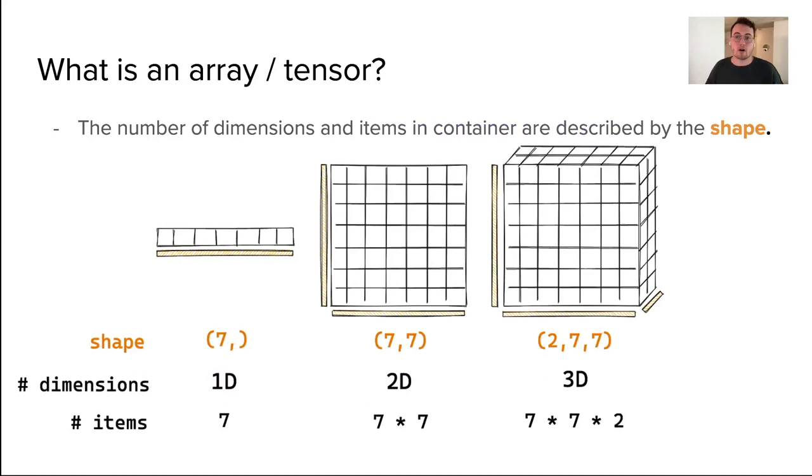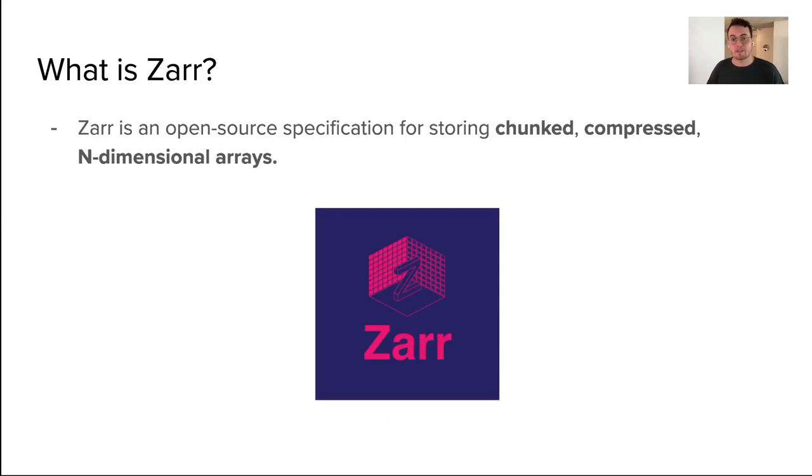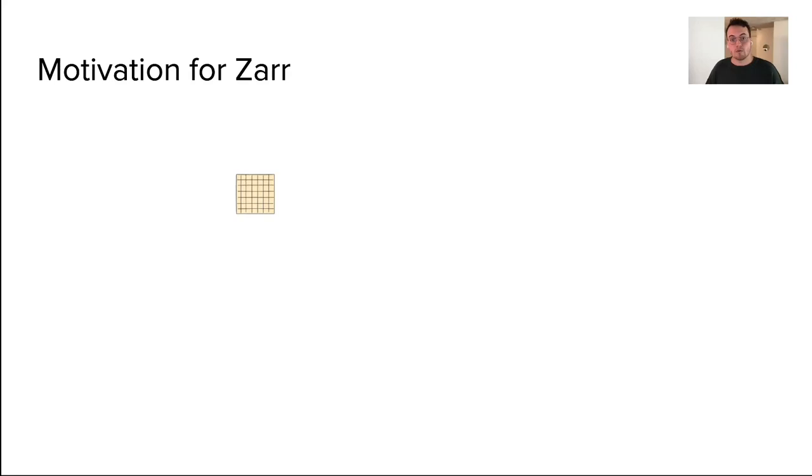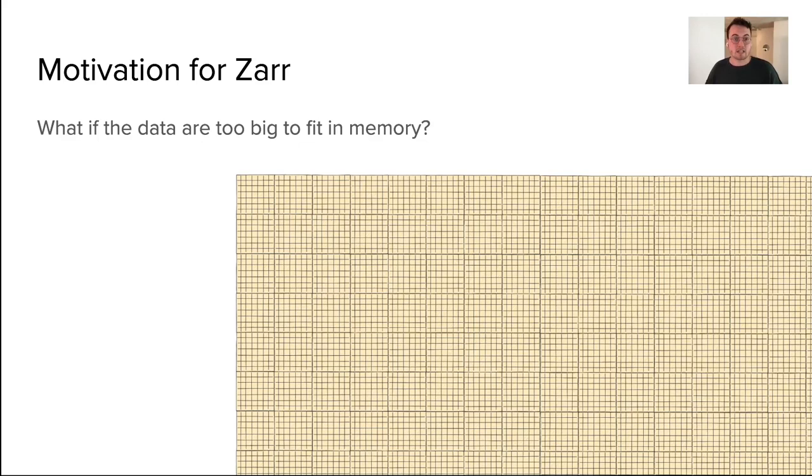Zarr is an open source specification for storing chunked, compressed, multi-dimensional arrays. When data sets are too large to fit into memory, we can use something like Zarr to help us deal with these large data sets.